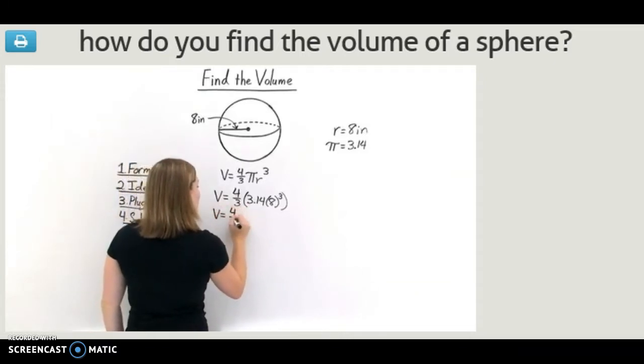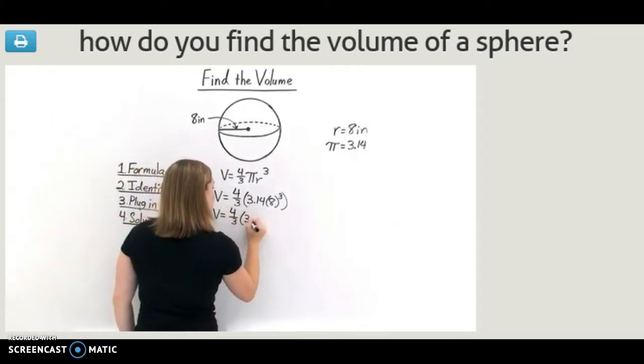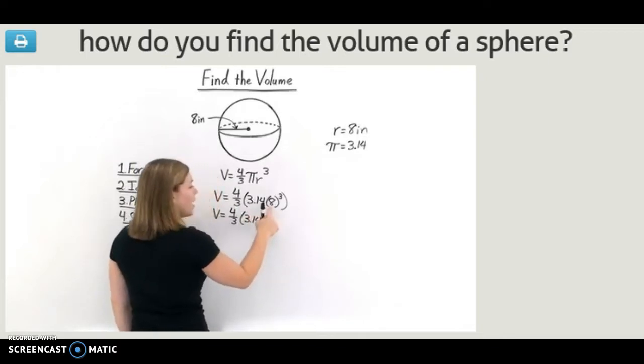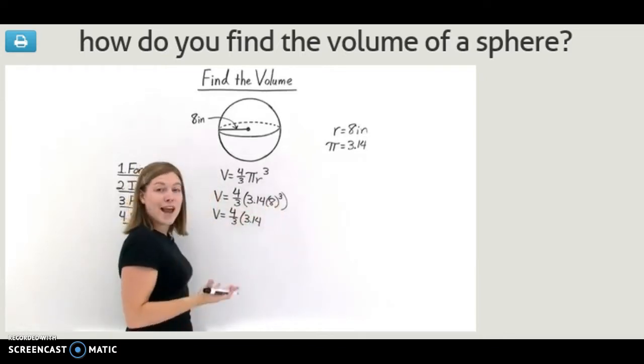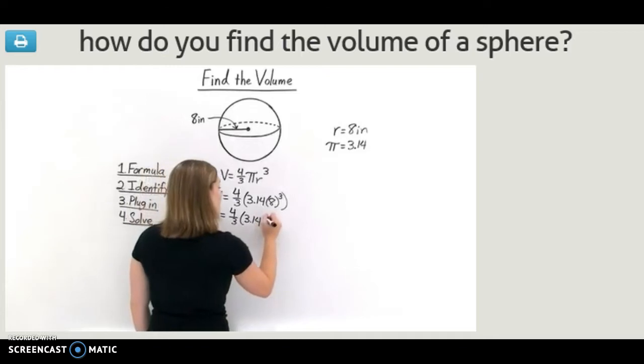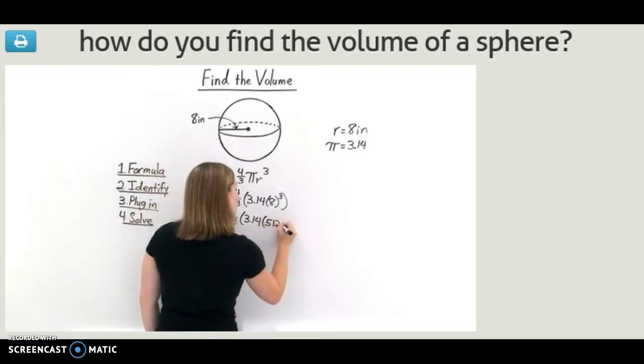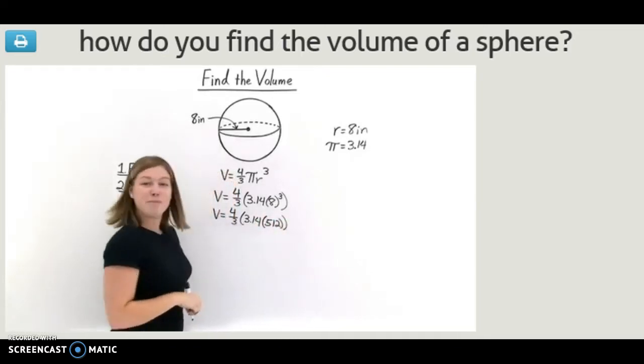The volume of our sphere is equal to 4 thirds times 3.14, and 8 cubed is the same as taking 8 and multiplying it together three times. If we do that, we get 512.